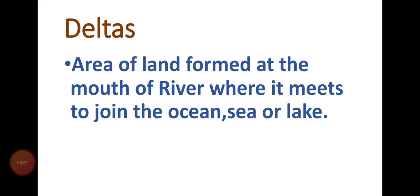What is delta? Delta is an area of land formed at the mouth of a river where it meets and joins the ocean, sea, or lake. When a river meets the ocean or sea, the point where it ends is called the mouth of the river — that point is called a delta. The river brings a lot of fertile soil with it from behind.